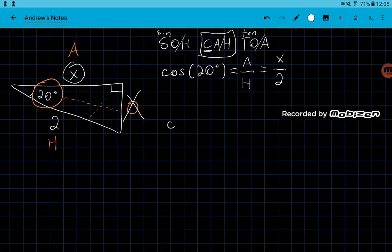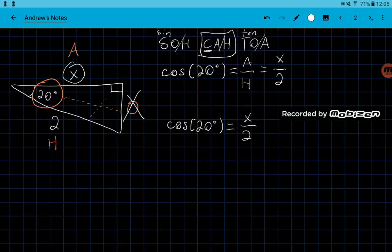So now we're left with cosine of 20 degrees is equal to x over 2. Now if you plug it into your calculator, into your scientific calculator, or you can also plug it into Google, but if you plug it into Google, you need to make sure that you type 20 degrees here instead of just 20.